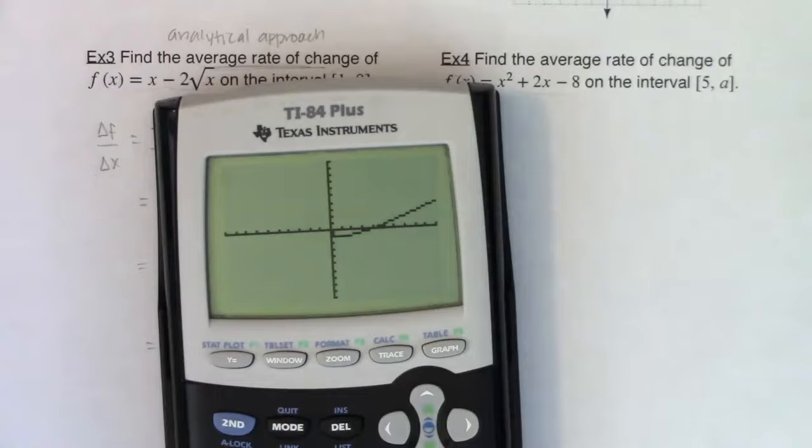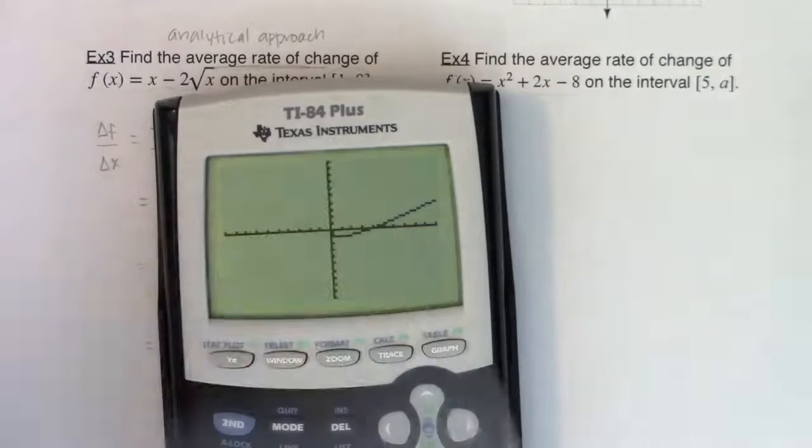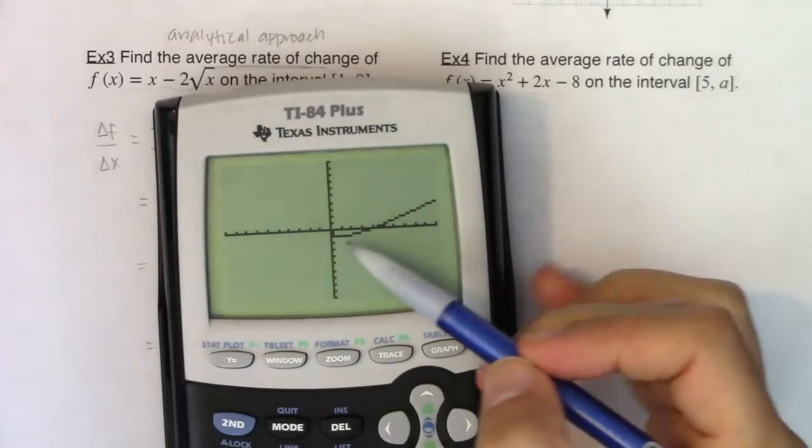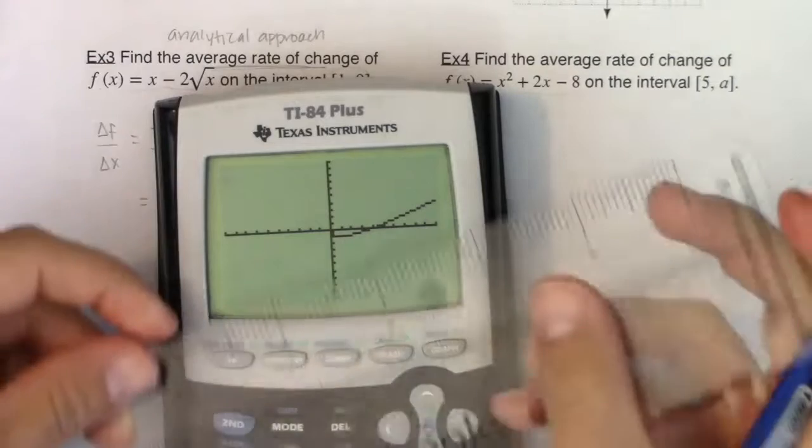And it's going to be a little hard to see. And let me grab my ruler. So if I was trying to do this, if I wanted to go from 1 to 9, you can see here's the point 1 negative 1, right? And then there's the point 9, 3.